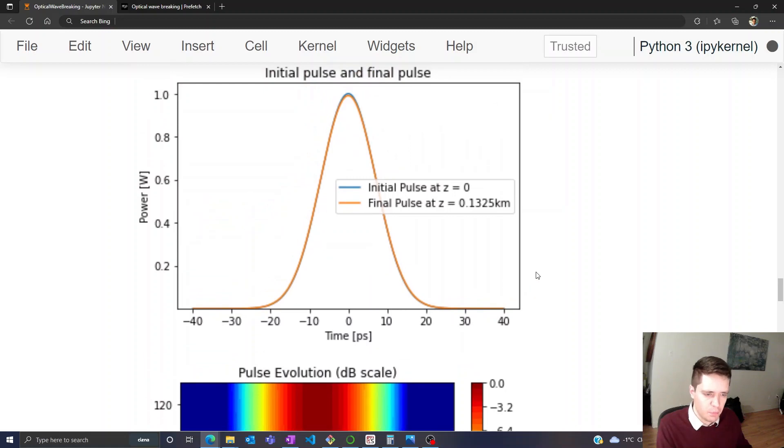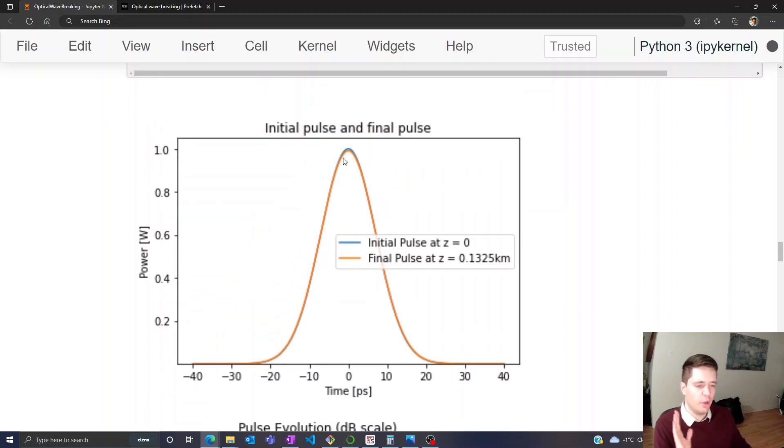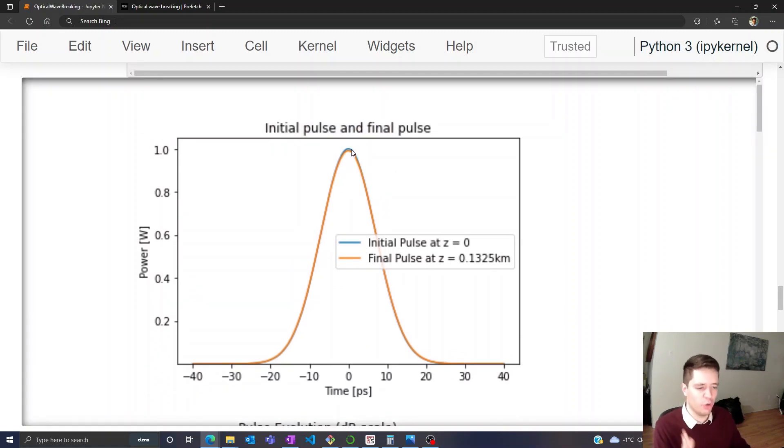So let's take a look at what we get. Alright, so we see that the initial pulse here marked in blue is almost identical to the final pulse marked in orange. So by itself, this amount of dispersion doesn't really change the pulse shape very much over this distance.